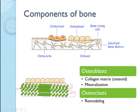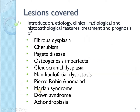The components of bone that you are going to visualize in bone diseases are the bone itself, the osteoid or collagen matrix, and the calcifications. There are a number of lesions covered under this topic.